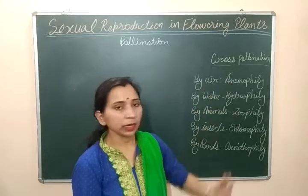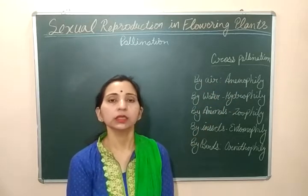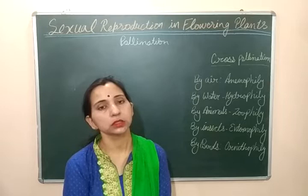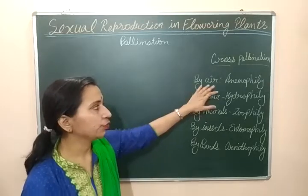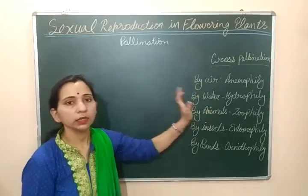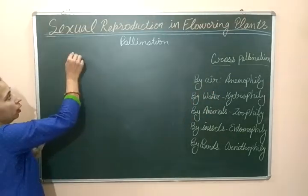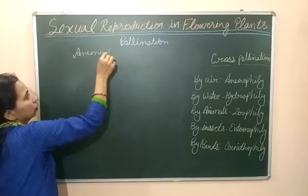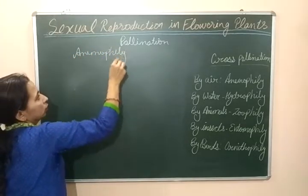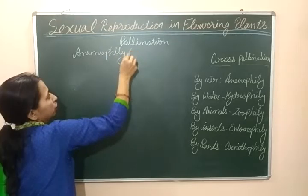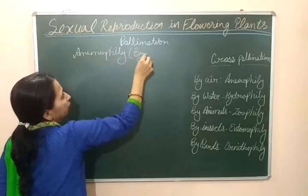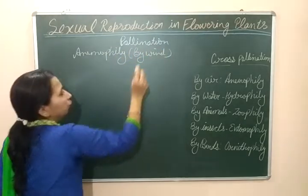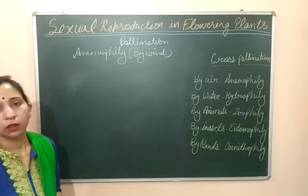Now let's discuss one by one these types of cross pollination and the characteristics of the flower which support this pollination. Let's start with the first one — anemophily. Anemophily is the pollination by wind or by air.